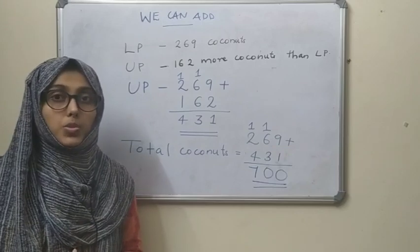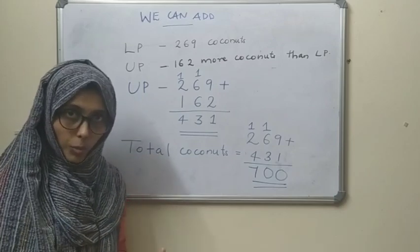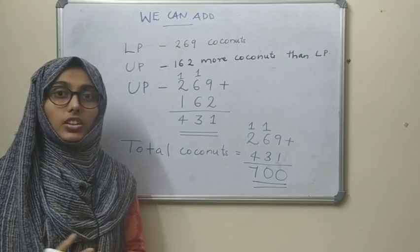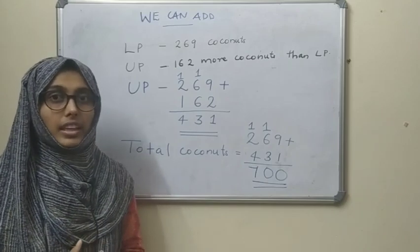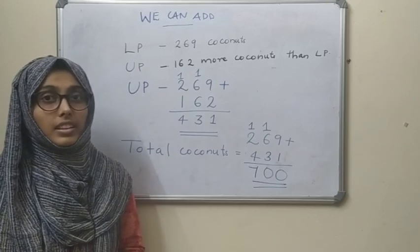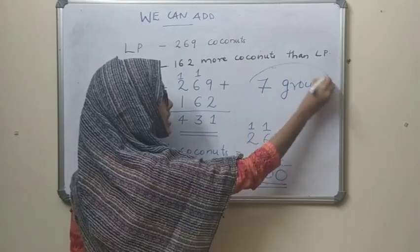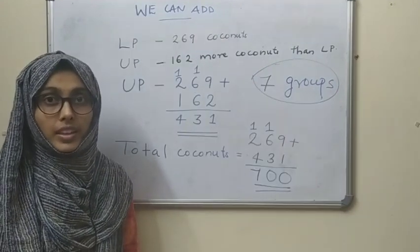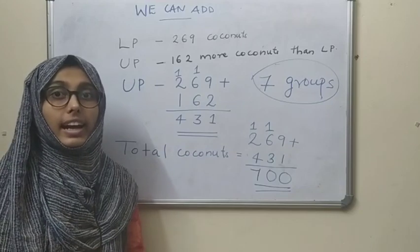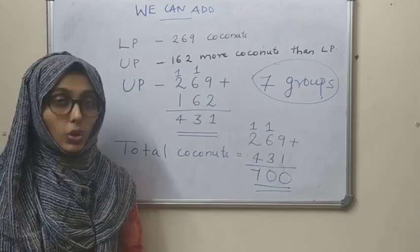Now, how many groups of 100 will there be? Suppose we are making groups of 100 — we take 100 coconuts and make a group, again 100 coconuts another group, again 100 more. How many groups will there be? There will be 7 groups, each group containing 100 coconuts. So 100 added 7 times equals 700.